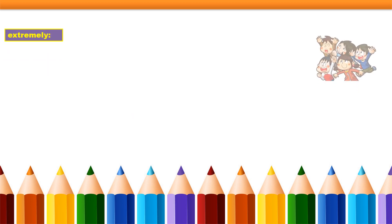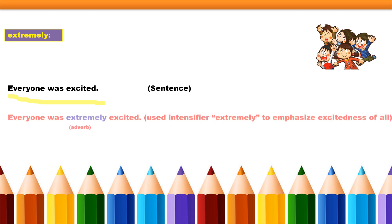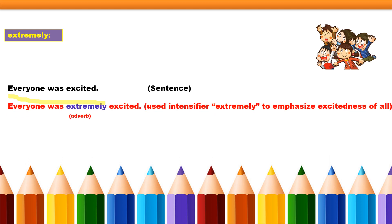The next intensifier is 'extremely.' The sentence is: 'Everyone was excited.' After adding the intensifier — 'extremely' is an adverb here — the sentence becomes: 'Everyone was extremely excited.' Here I want to emphasize the excitement of everyone.